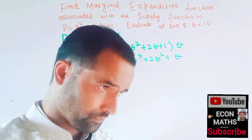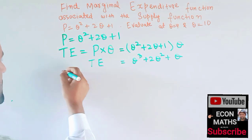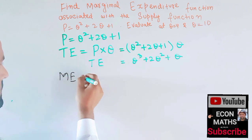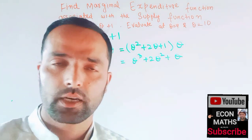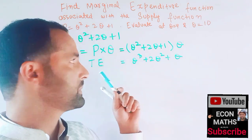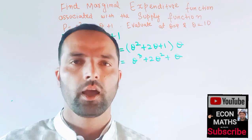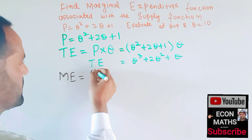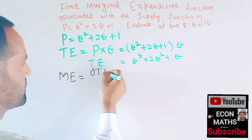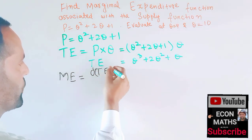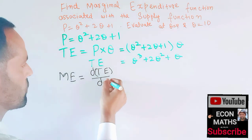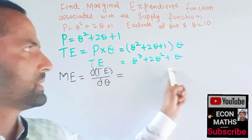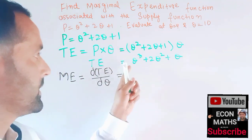Now to get the marginal expenditure function, we just need to take the derivative of the total expenditure function with respect to output — that means taking the derivative of the total expenditure function with respect to quantity.